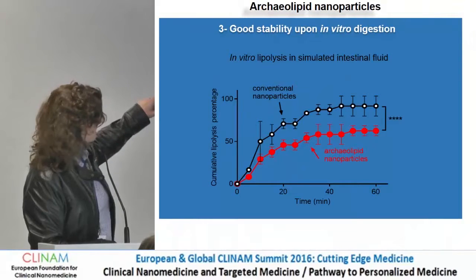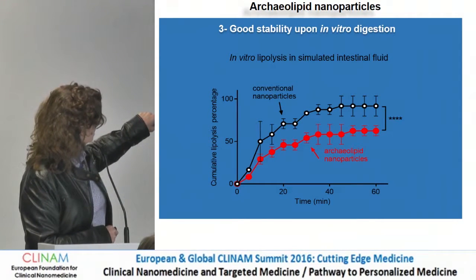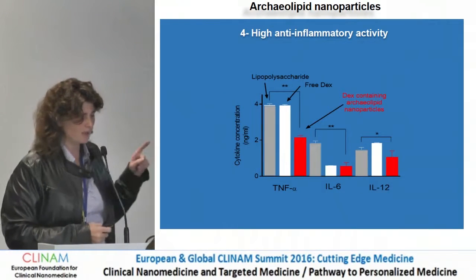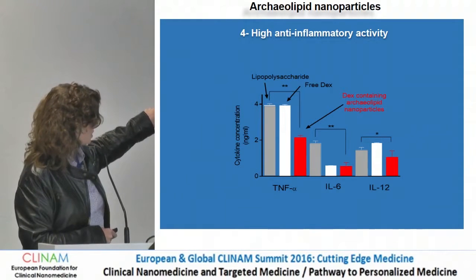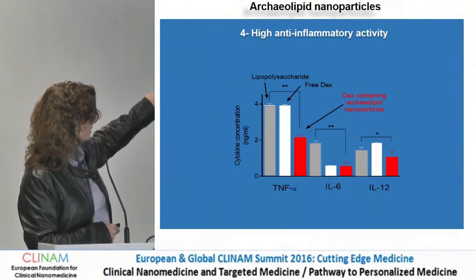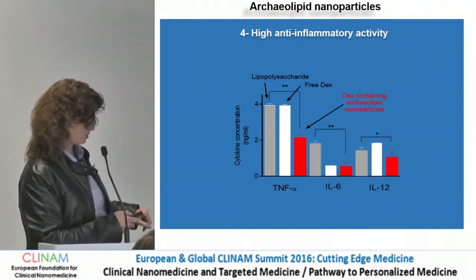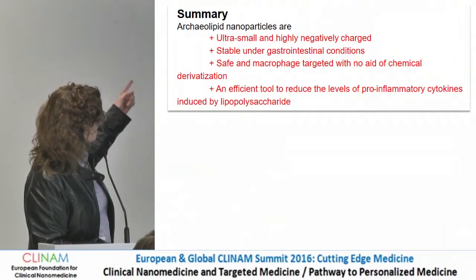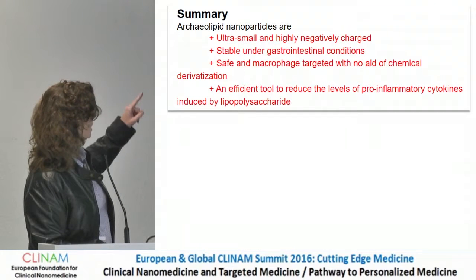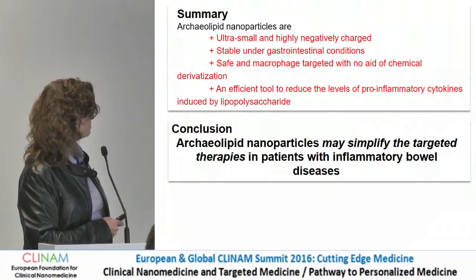They show good stability upon incubation in simulated gastric and intestinal fluids, and are highly resistant to in vitro lipolysis in the presence of pancreatic lipases. They also show high anti-inflammatory activity. Free dexamethasone and dexamethasone loaded on conventional nanoparticles could only reduce the production of interleukin-6 on macrophages activated with lipopolysaccharide. On the other hand, archaeolipid nanoparticles significantly reduced the production of all pro-inflammatory cytokines. In summary, archaeolipid nanoparticles are ultra-small, highly negative, stable under gastrointestinal conditions, safe, macrophage-targeted without chemical derivatization, and an efficient tool to reduce levels of pro-inflammatory cytokines.